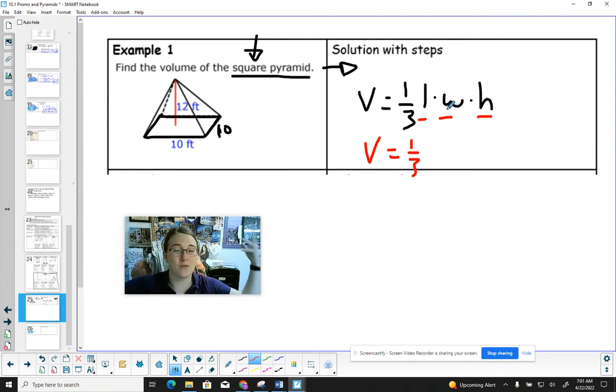Length times width is the formula for area of a square. And so that's going to be my length, is 10. My width is also 10. So I have 10 times 10. And then what's our height of this pyramid? How tall does it stand?